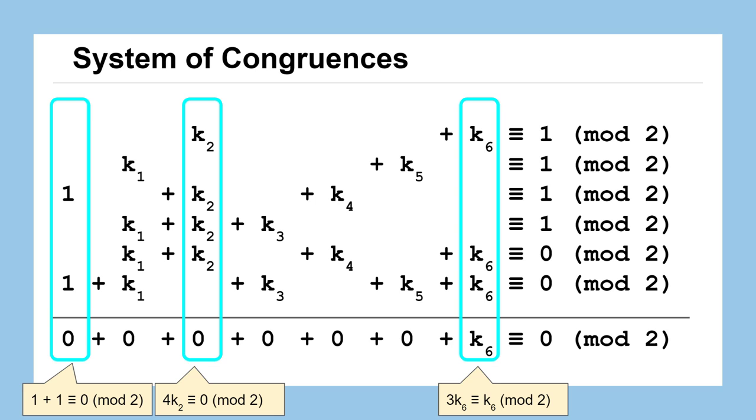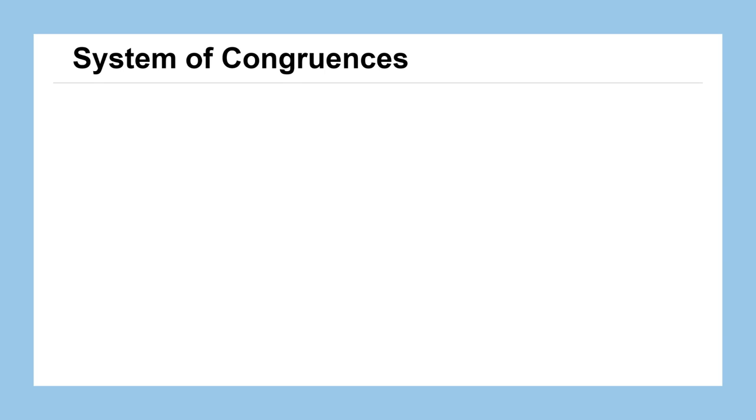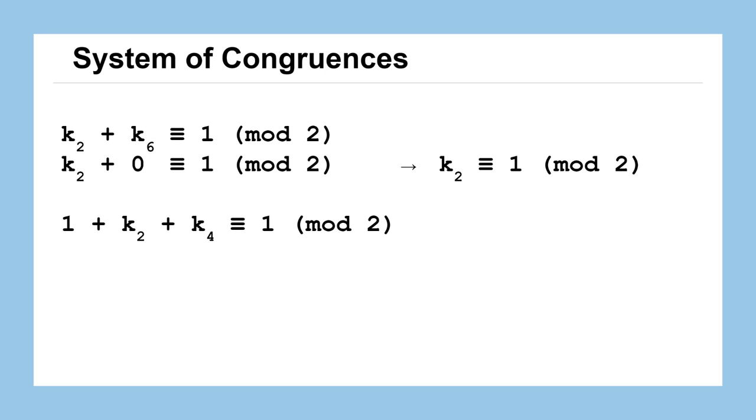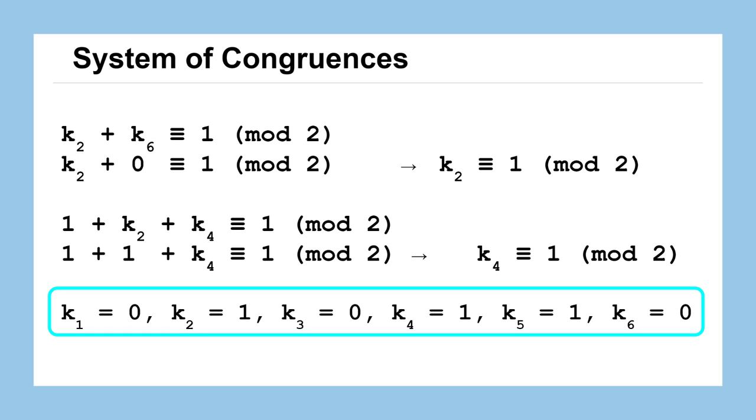We have one piece of information that we can now use to apply to other equations in that system to start solving for other values of k. So if we know that k2 plus k6 is congruent to 1, and we now know that k6 is congruent to 0, we really know that k2 plus 0 is congruent to 1, which implies that k2 itself is congruent to 1. Now we've got a second piece of information. Applying that to another equation in the system, we now know that 1 plus k2 plus k4 is congruent to 1. When we substitute 1 in for k2, we're able to deduce that k4 itself is congruent to 1.